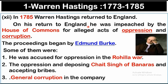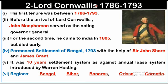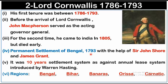The next Governor-General was Lord Cornwallis, whose tenure was from 1786 to 1793. Before his arrival, John Macpherson served as Acting Governor-General. For the second time, Cornwallis came to India in 1805 as Governor-General but died very early. Lord Cornwallis was famous for the Permanent Settlement of Bengal, propounded in 1793 with the help of Sir John Shore and James Grant.